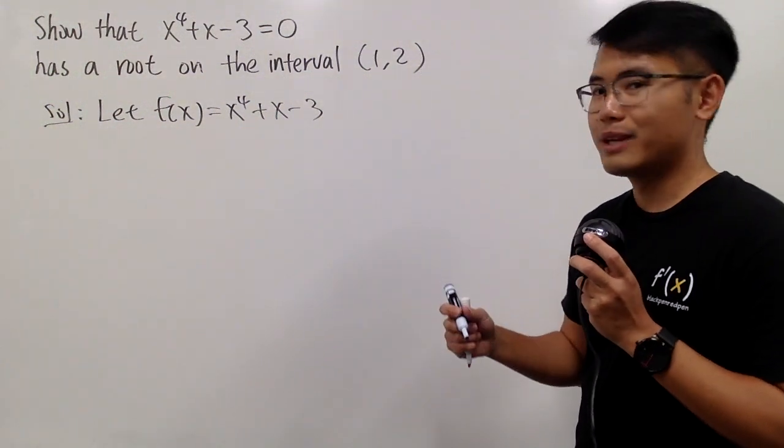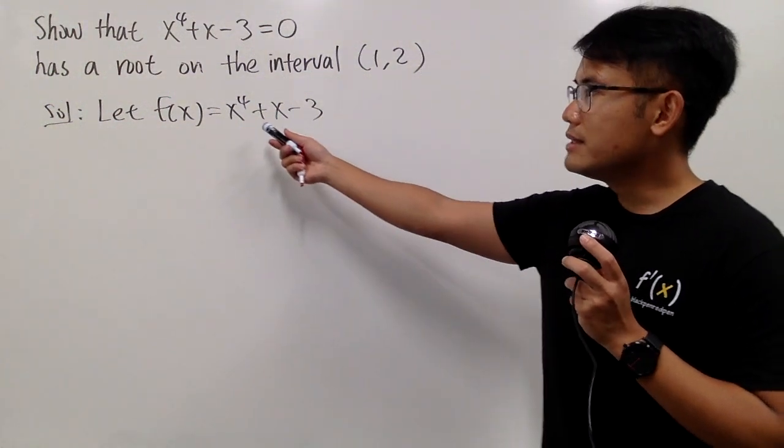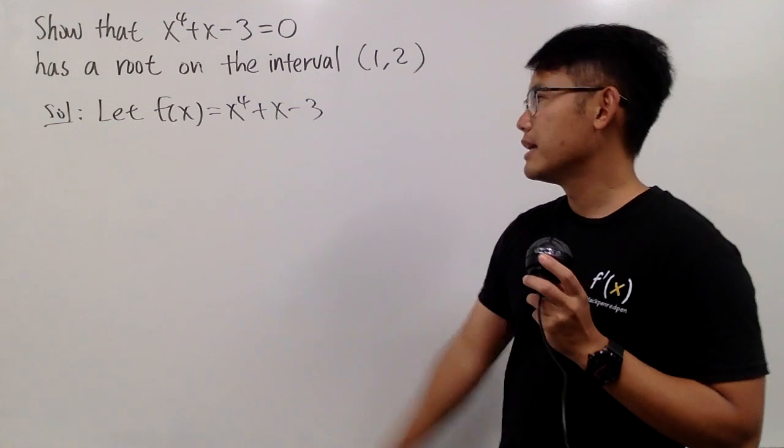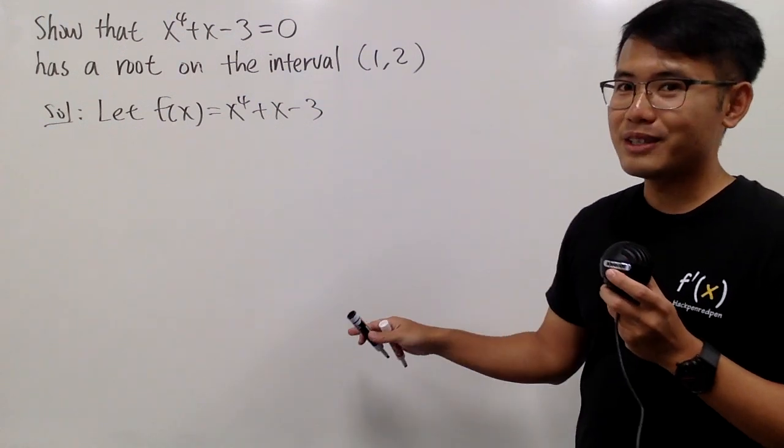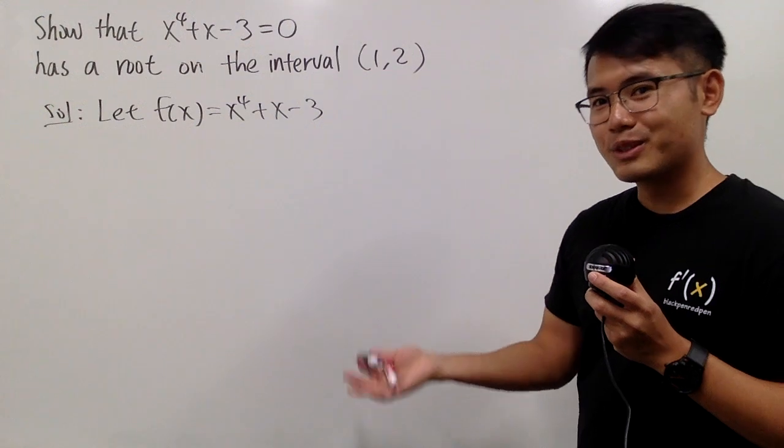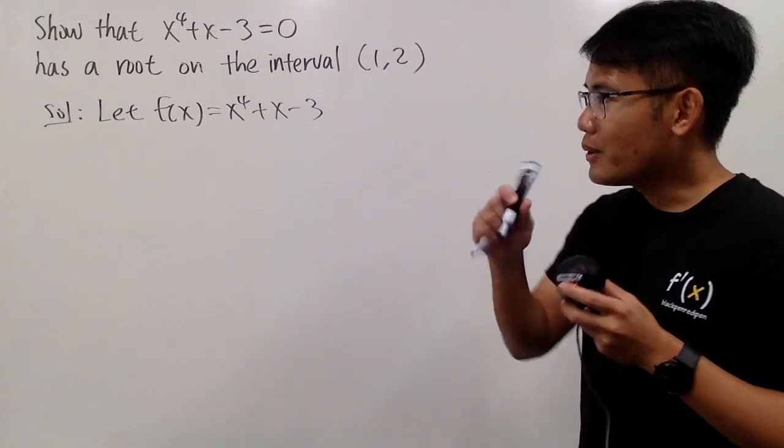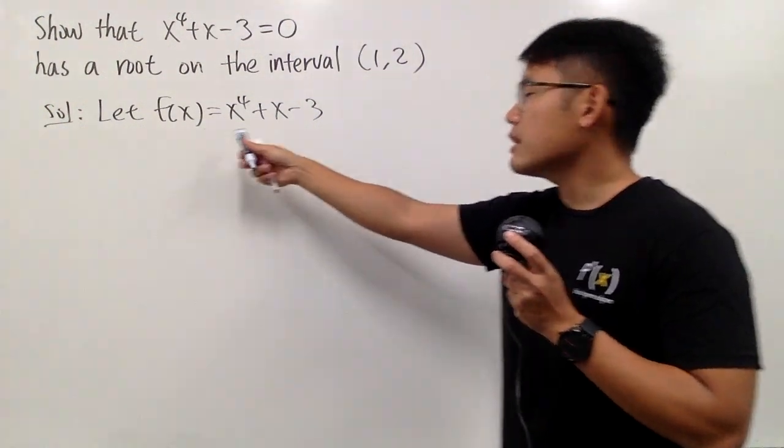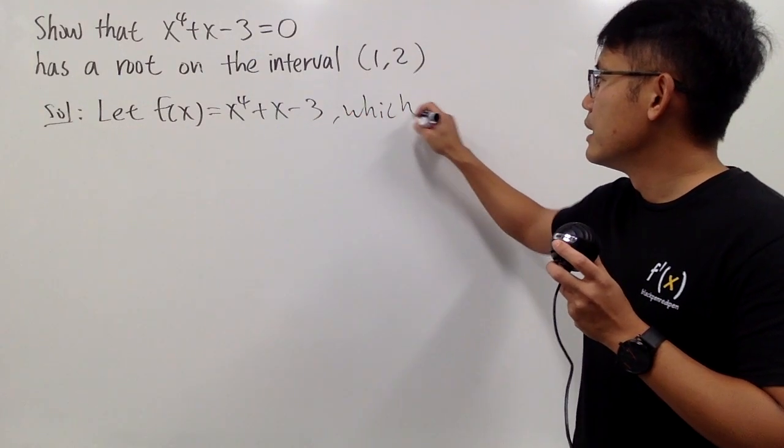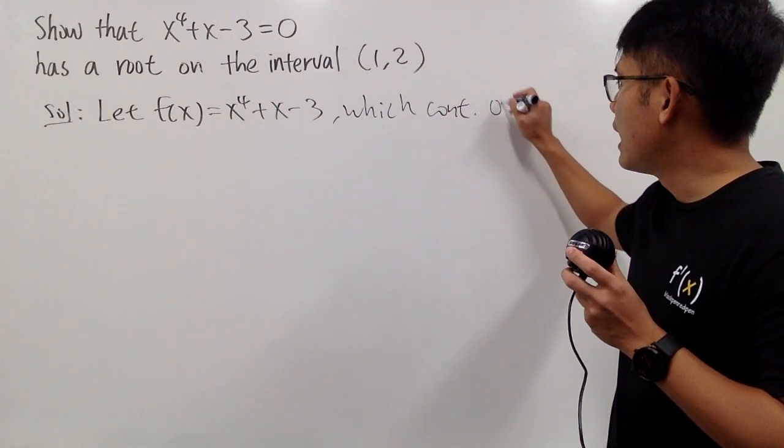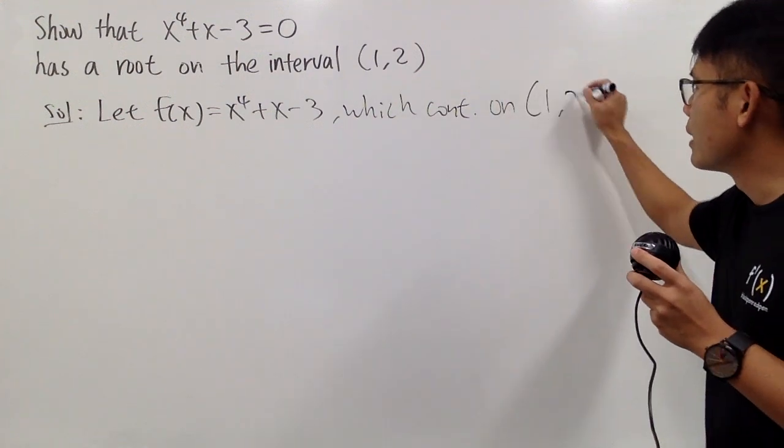So I'm going to define this to be the function. And I will have to tell you guys that, you see, this is just a polynomial. And the best thing that you can remember is that there's no fraction, there's no denominator, there's no square root, there's nothing that will bother you. So you're just going to say that this is the function which is continuous on this interval, 1, 2.